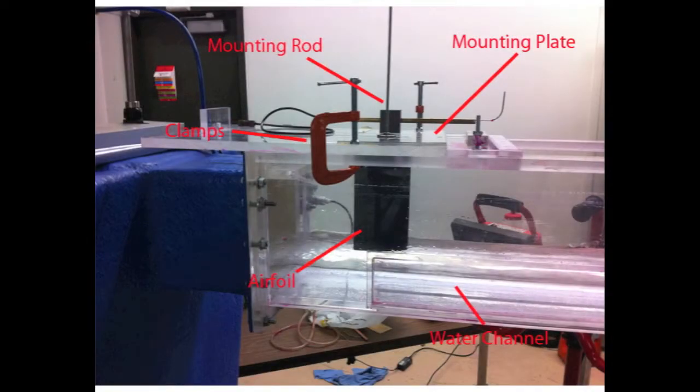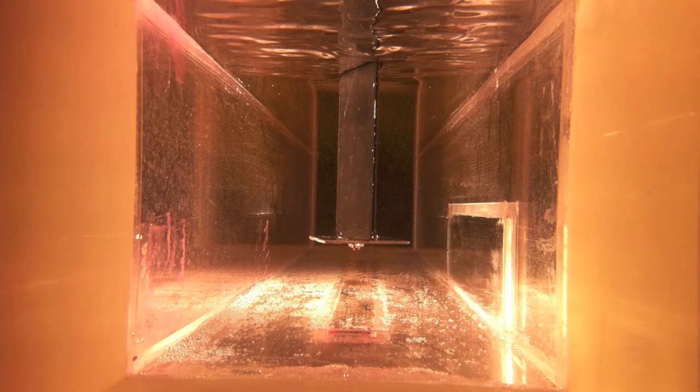The airfoil was installed in a water channel first without the winglet, and then with the winglet, and dye was used to visualize water flow around the airfoil. The airfoil had a constant cross-section, as seen in this top view of the airfoil installed in the water channel.